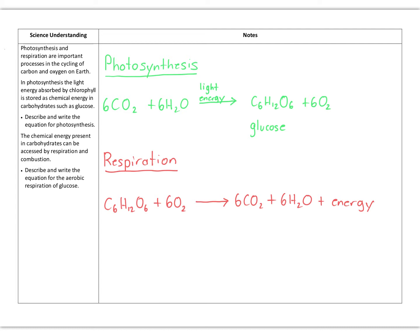Glucose is the fuel of life, and it gets used in our cells — in the mitochondria — through a process called respiration, where glucose reacts with oxygen carried from our lungs via haemoglobin through our arteries. That glucose and oxygen react to form carbon dioxide and water, releasing energy. In biology, that energy produces ATP from ADP and phosphate. You can see those two reactions are just the forward and reverse of each other.